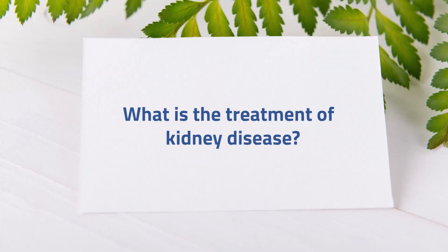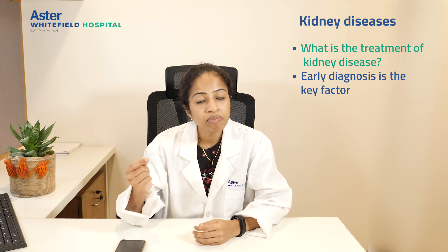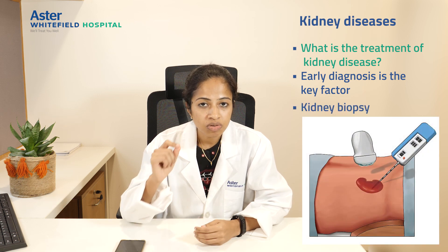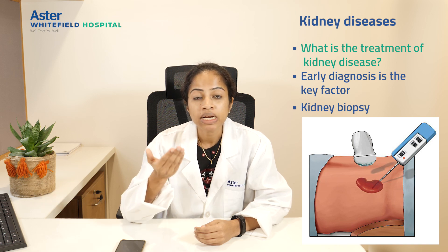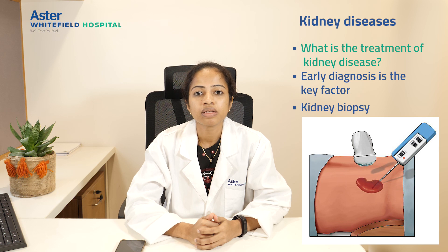Coming to another common question about the treatment of kidney disease: if I have kidney disease, can it be treated? Early diagnosis is the key factor. If kidney diseases are picked up early enough, we now have effective treatments to slow down progression significantly. This means we can delay the onset of end-stage kidney disease or advanced kidney failure by about 10–15 years. If picked up very early — at a stage where there is protein leak but irreversible damage has not yet happened — we can perform a kidney biopsy, passing a needle through the kidney to take a small microscopic sample, examine it under a microscope, identify the underlying disease, and offer curative, reversible therapies.